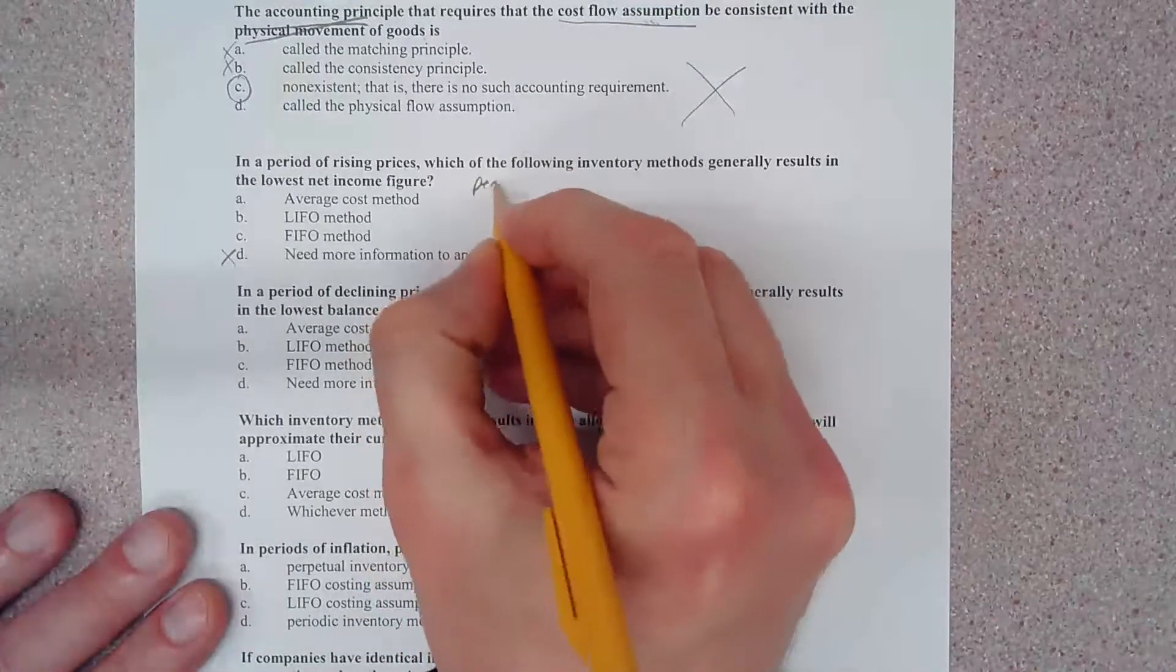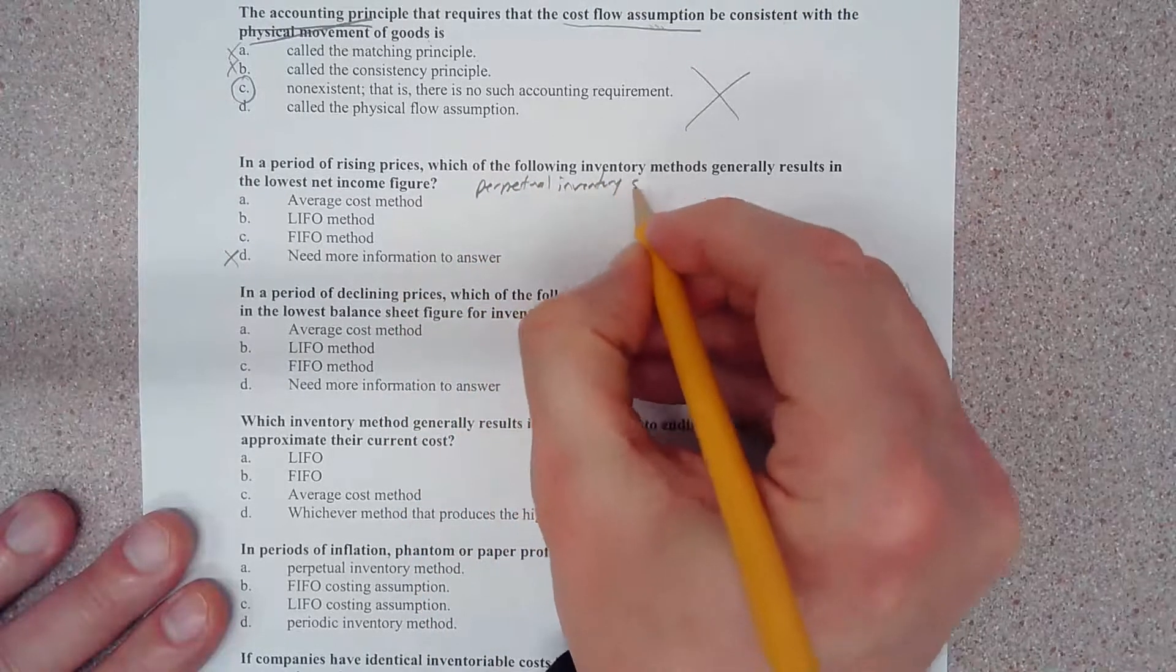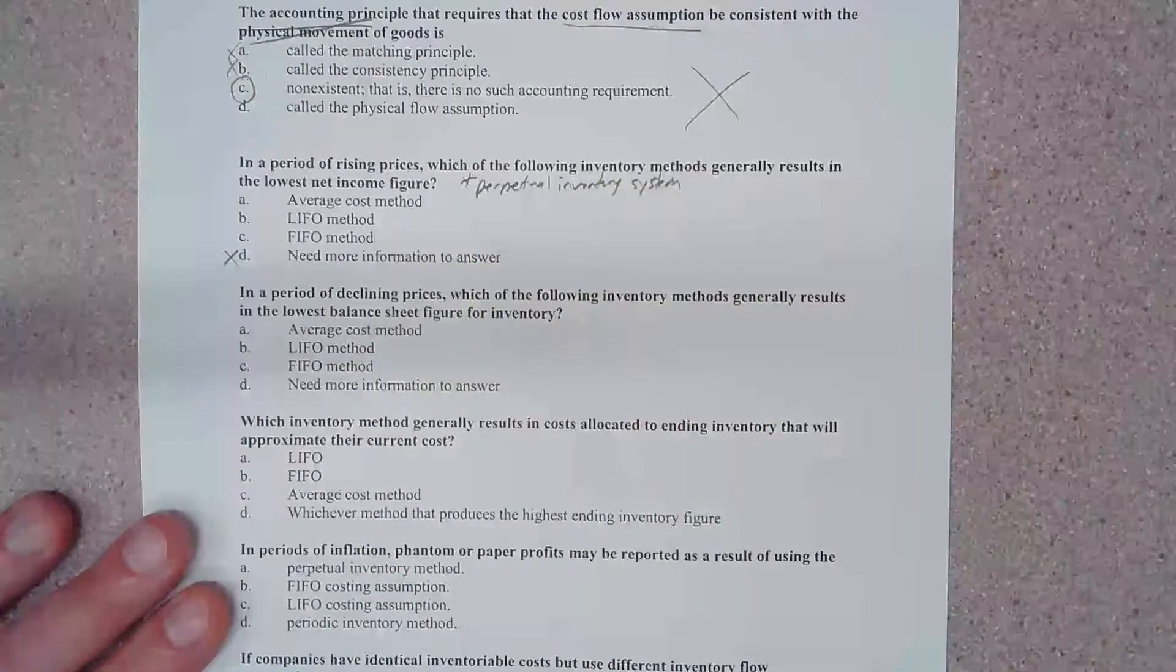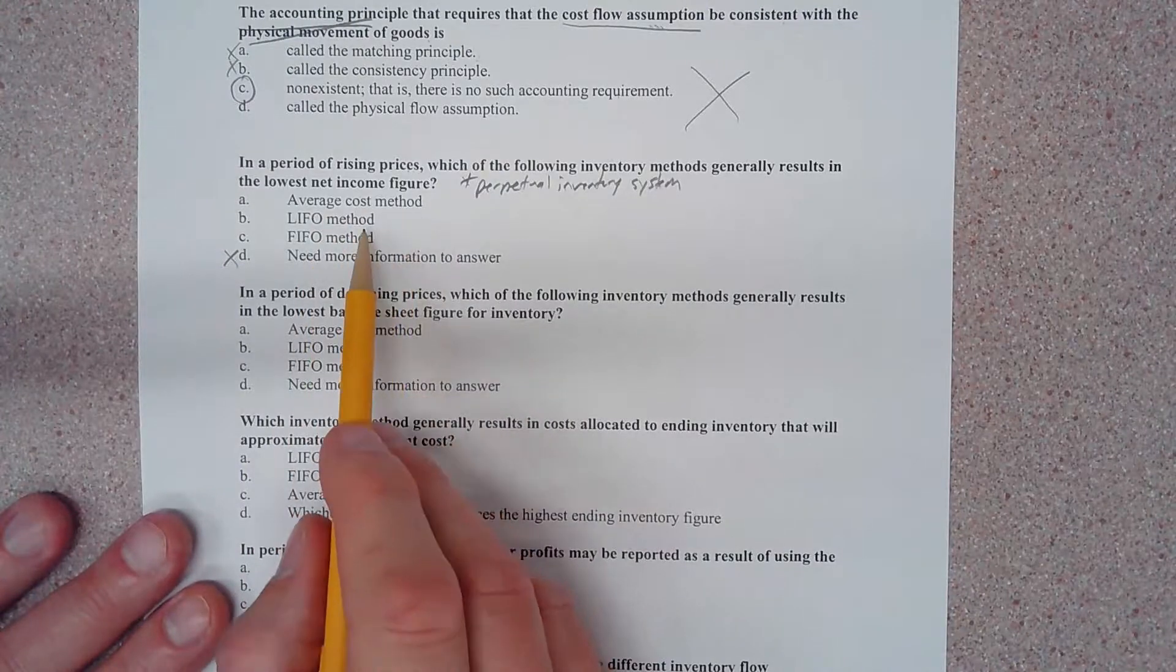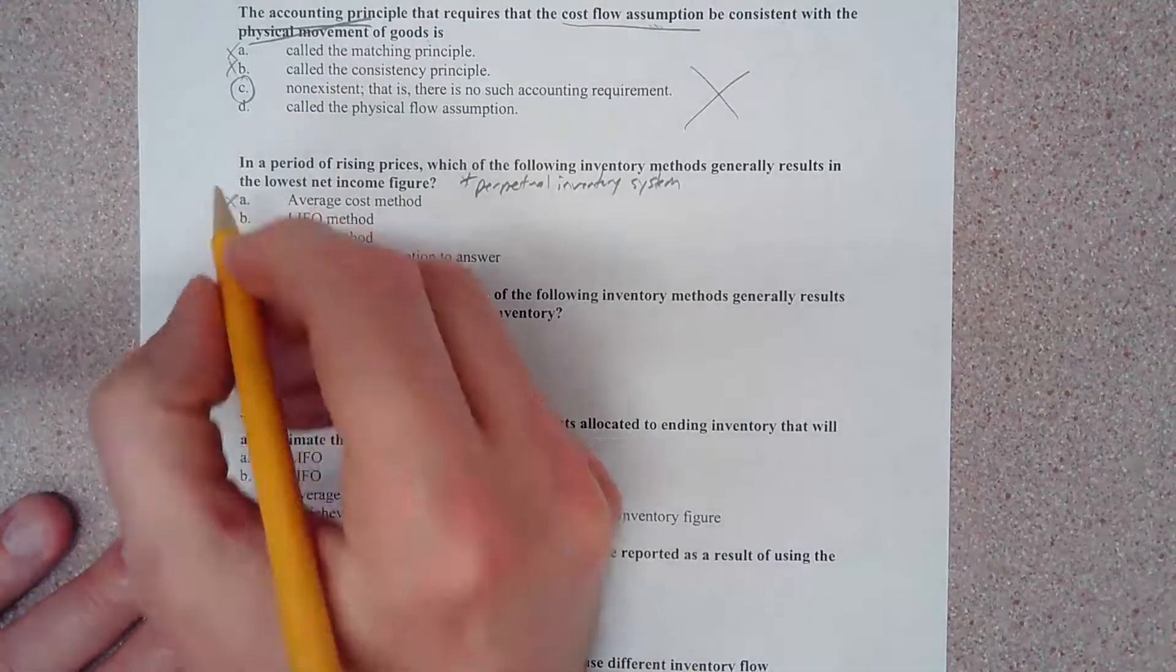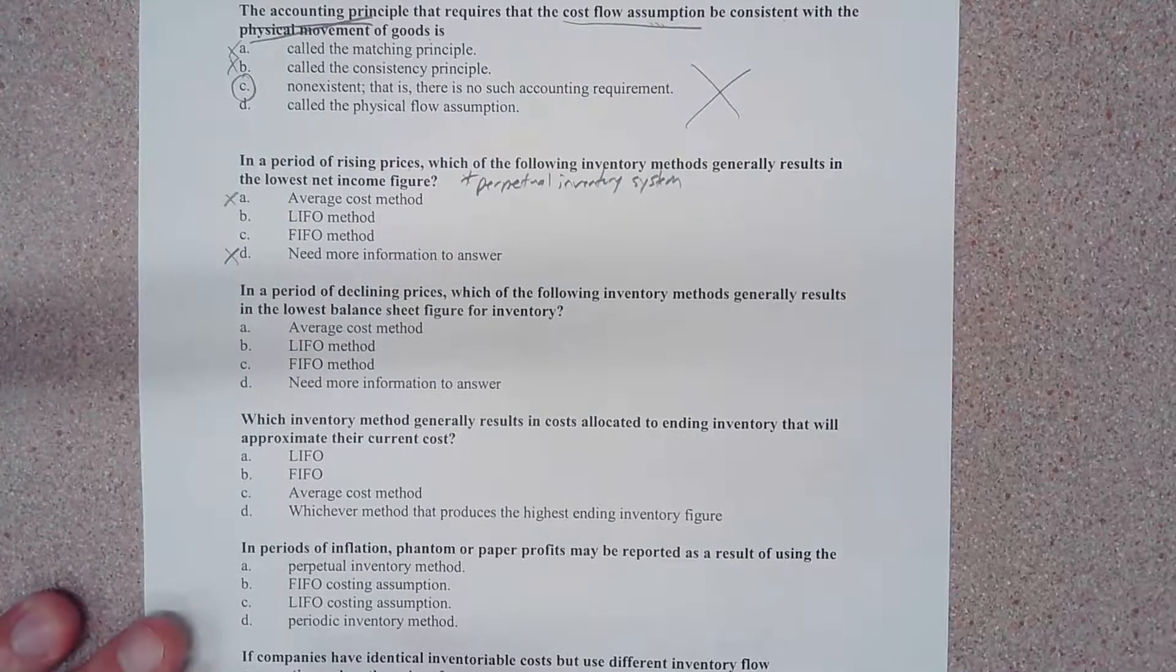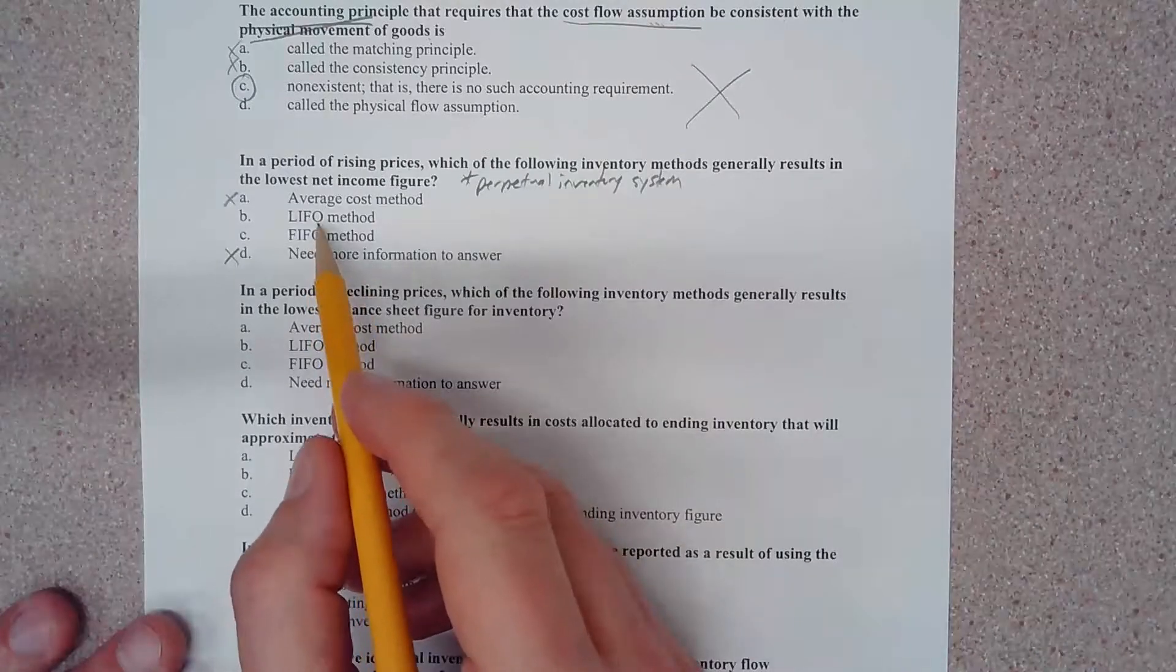I will also tell you that given an assumption of a perpetual inventory system, the average cost method will always result in figures in between LIFO and FIFO, whether prices are rising or whether they're going down, either way. So that means A is also wrong because the average cost method will always be somewhere in between those two.